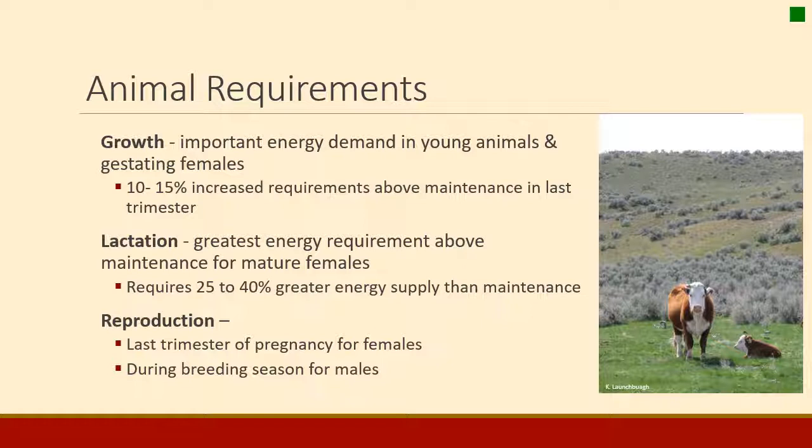Above maintenance, there are several other things animals require energy and nutrients for. The first is growth, especially important for young animals as they mature. Growth is also important for gestating females, especially in that last trimester when the calf or foal is developing — it takes 10 to 15 percent more energy above maintenance in that last trimester. As people say about a pregnant woman, you're eating for two, especially in the last trimester.